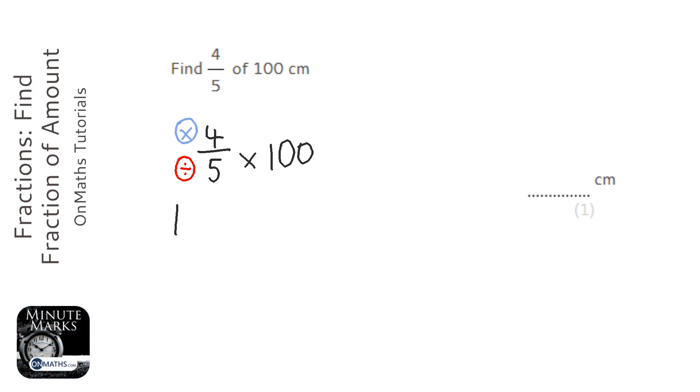So the first thing we need to do is get the quantity and divide it by the bottom, divide it by five, and then times it by the top.